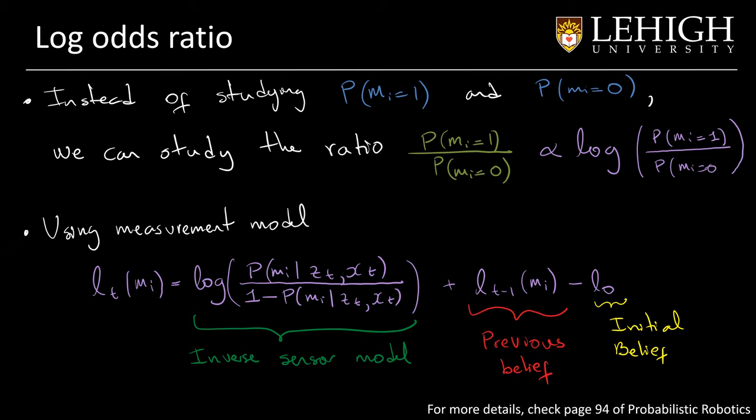So, the great part of this function is that it can be computed, as you see, recursively. The new value of the function can be computed based on the previous value. And that means that we can add measurements to the system. We can continuously add measurements and we will just improve our estimation of the map.